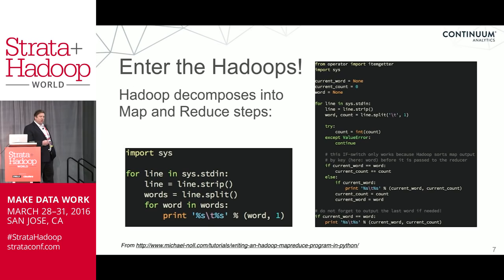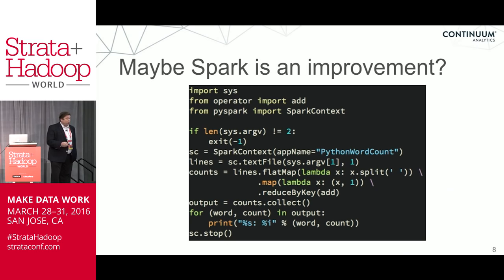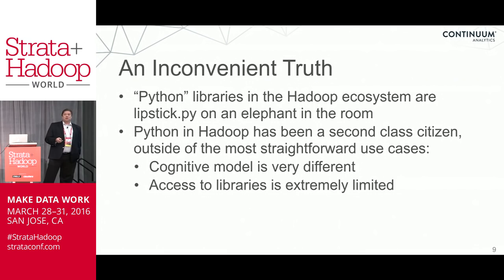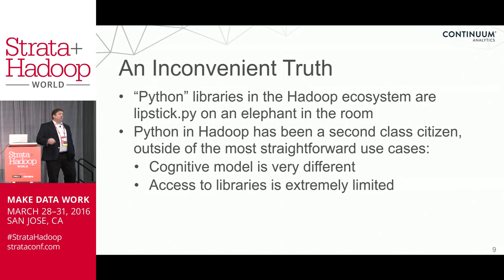Enter Spark. Spark can be an improvement, although when we're using Spark we're basically just mapping low-level Spark APIs and gluing them together with Python syntax. You can use some of the splits and reduce-by concepts, but it's not quite as simple to use either. These are the different APIs being used by PySpark. An inconvenient truth about Python scalability is that typically Python libraries in the Hadoop ecosystem have been the lipstick on the elephant in the room — they're not native, they're second-class citizens. The cognitive model is very different from typical Python development, and access to libraries is extremely limited.